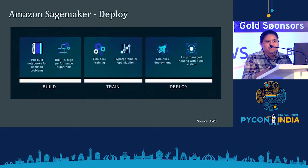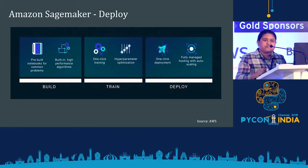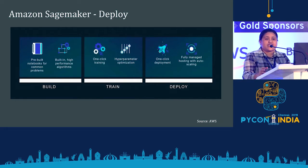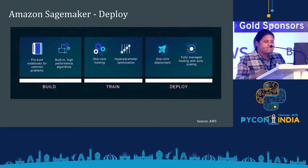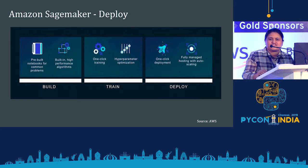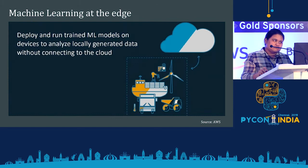SageMaker also provides one-click deployment. I emphasize this because with an on-premise model you'd need to create an entire CI/CD pipeline for deployment. When your focus is just data science or machine learning, you just need to focus on that rather than the infrastructure. AWS SageMaker gives you one-click deployment, fully managed hosting, and helps you auto-scale — you don't need to worry about servers running out of space.